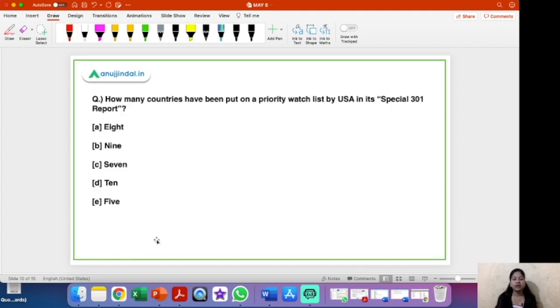Now we are moving on to our next question. Guys this question is very important and I would say that this is the highlight of today's video. So do listen to me very carefully in this question. How many countries have been put on a priority watch list by USA in its special 301 report? So what is this report? What does this mean, this priority watch list? That we will be discussing a little later but let's first discuss the number of countries.